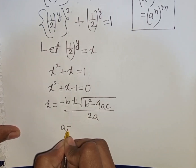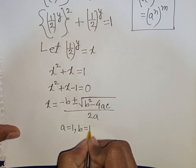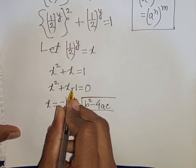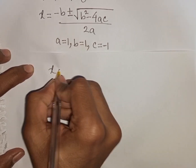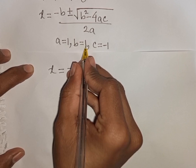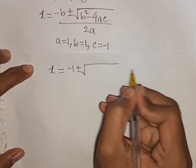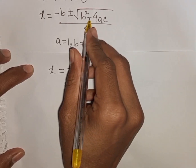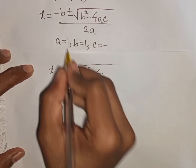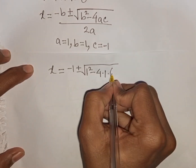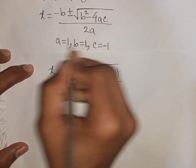Here a equals 1, b equals 1, and c equals negative 1. Substituting: x equals minus 1 plus or minus square root of 1 squared minus 4 times 1 times negative 1, divided by 2 times 1.